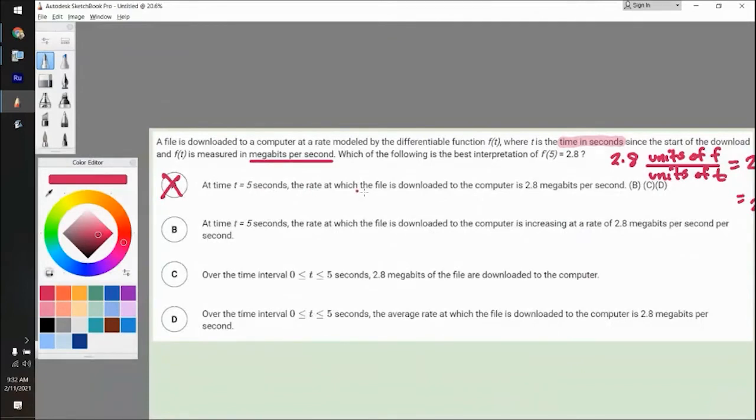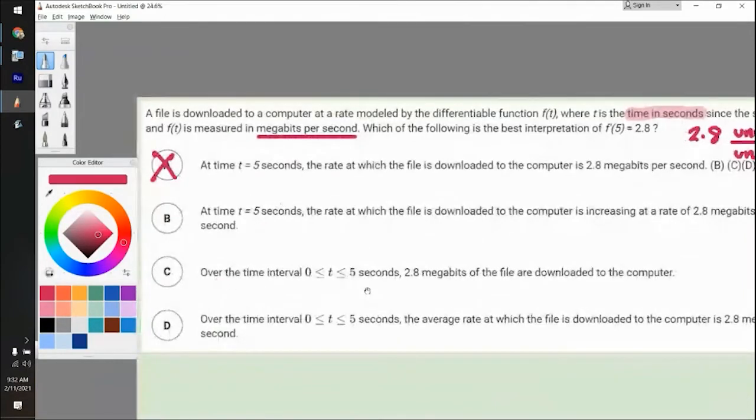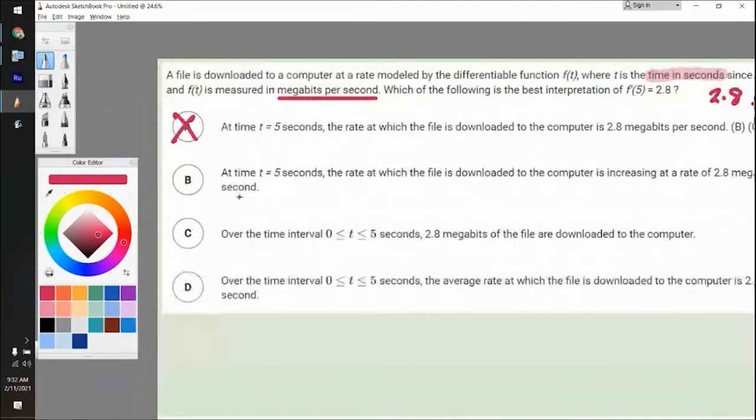At t equals five, the rate at which the file is downloaded is 2.8 megabits per second. No, it's not, it's megabits per second squared. So it's not that one. Let's skip B for now. C, over the interval from zero to five, 2.8 megabits of the file are downloaded. No, it's the rate of the rate is 2.8, not just 2.8 megabits. There's not even any time in this. That's insane. It's not that one. This one says average. Never pick the average one unless they try to trick you, which I've never seen them do that. But a derivative is not an average. So you cannot use the average rate of change.